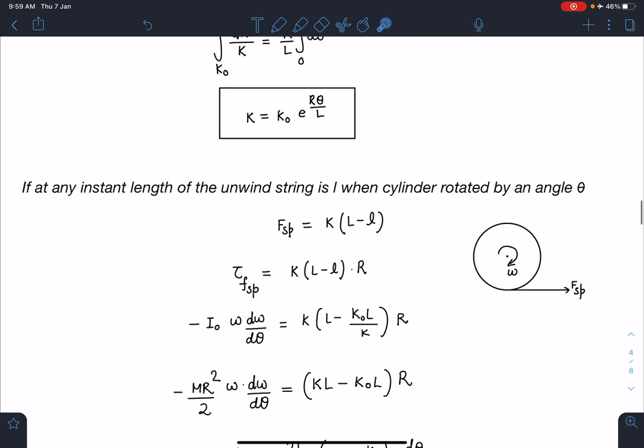Next, if at any instant the length of unwinding string is l, whatever part is left this length I'm taking as l. How much length is already present on this part? The length present on this part is capital L minus l. So I can write here the spring force, the change in length, I can write it as k times (L - l). This torque I can write, this spring force is going to act in this direction. So this τ_spring I can write as k(L - l)R. Here τ equals Iα I can write.